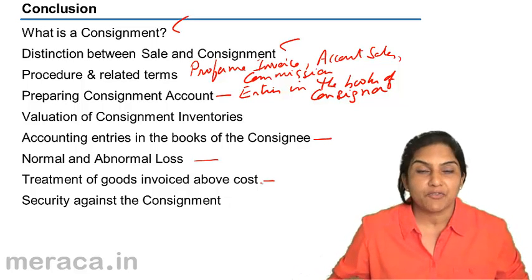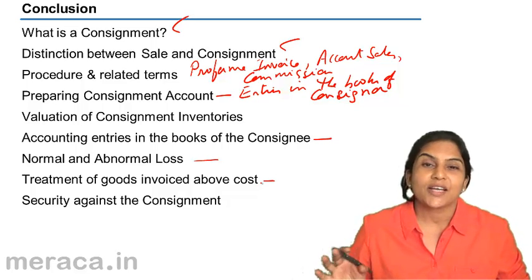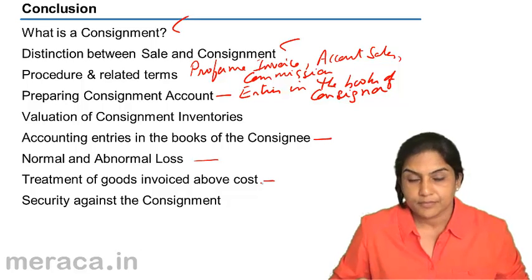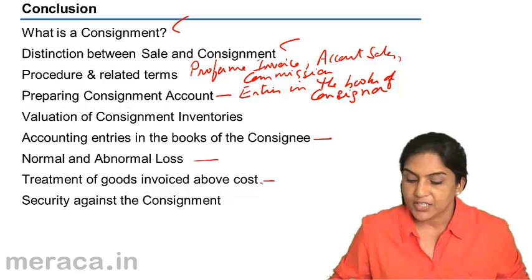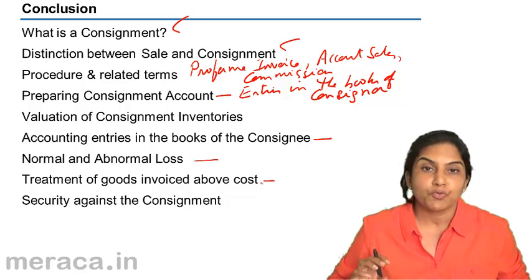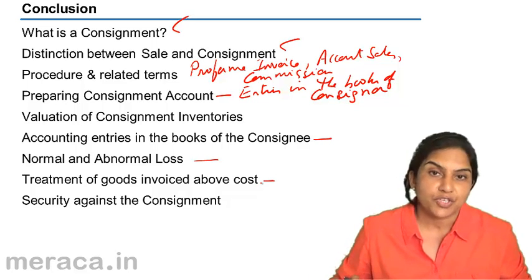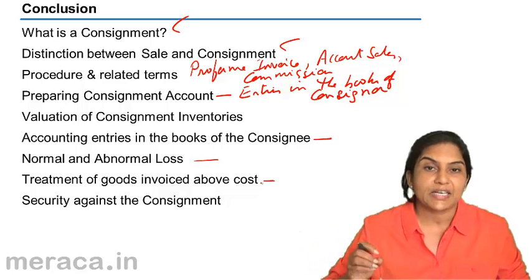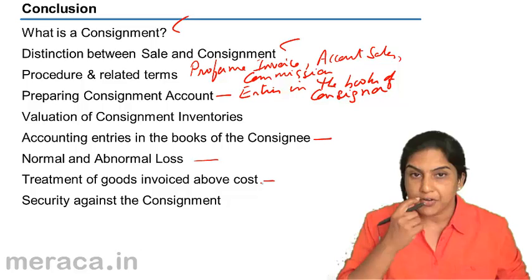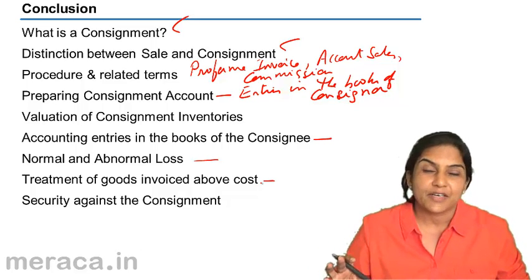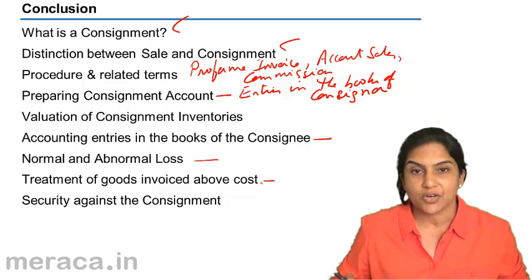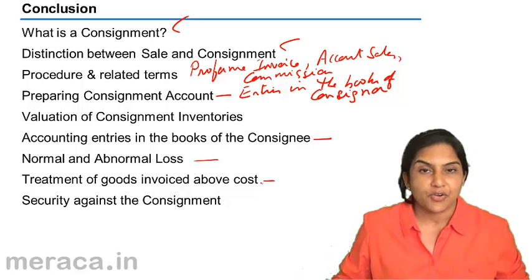Then we discussed the concept of goods being invoiced above cost, which the consignor sometimes does so that the consignee is not aware of the actual cost of the goods and does not know the margin of profit being made. There were two additional entries: one to remove the loading on goods sent on consignment, and another for the creation of a stock reserve — the loading in the closing stock. The entry for stock reserve is to debit consignment account and credit stock reserve. The entry for loading on goods sent on consignment is the reverse: goods sent on consignment account debit to consignment.